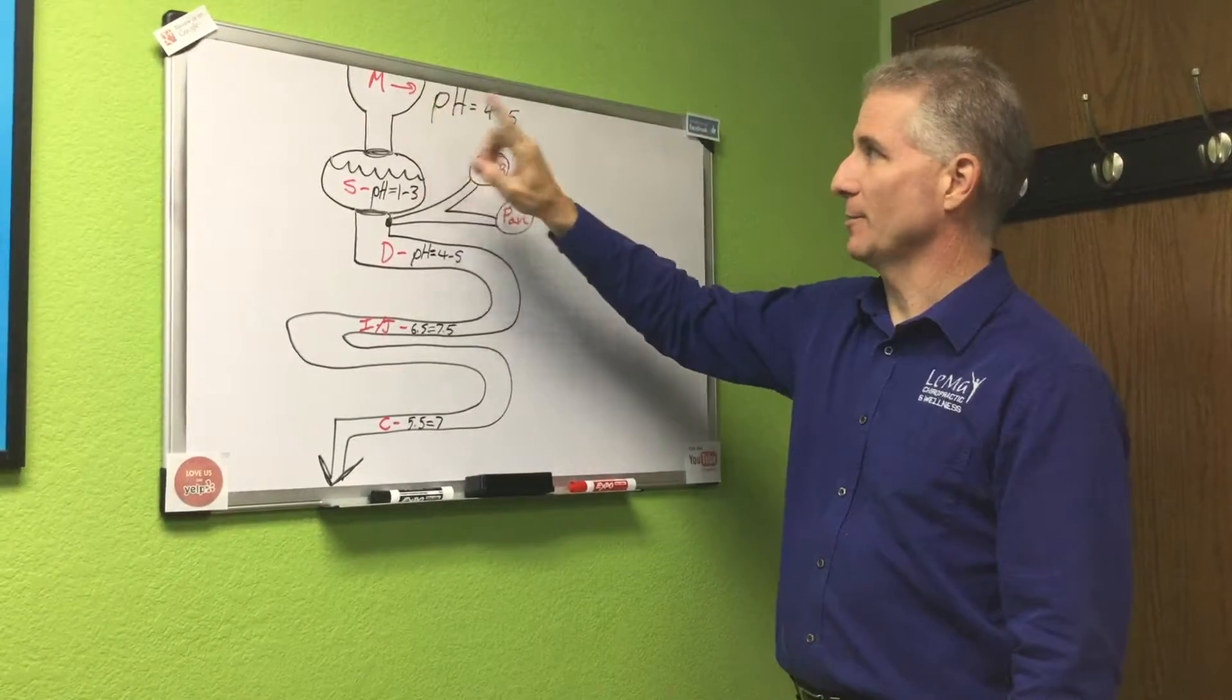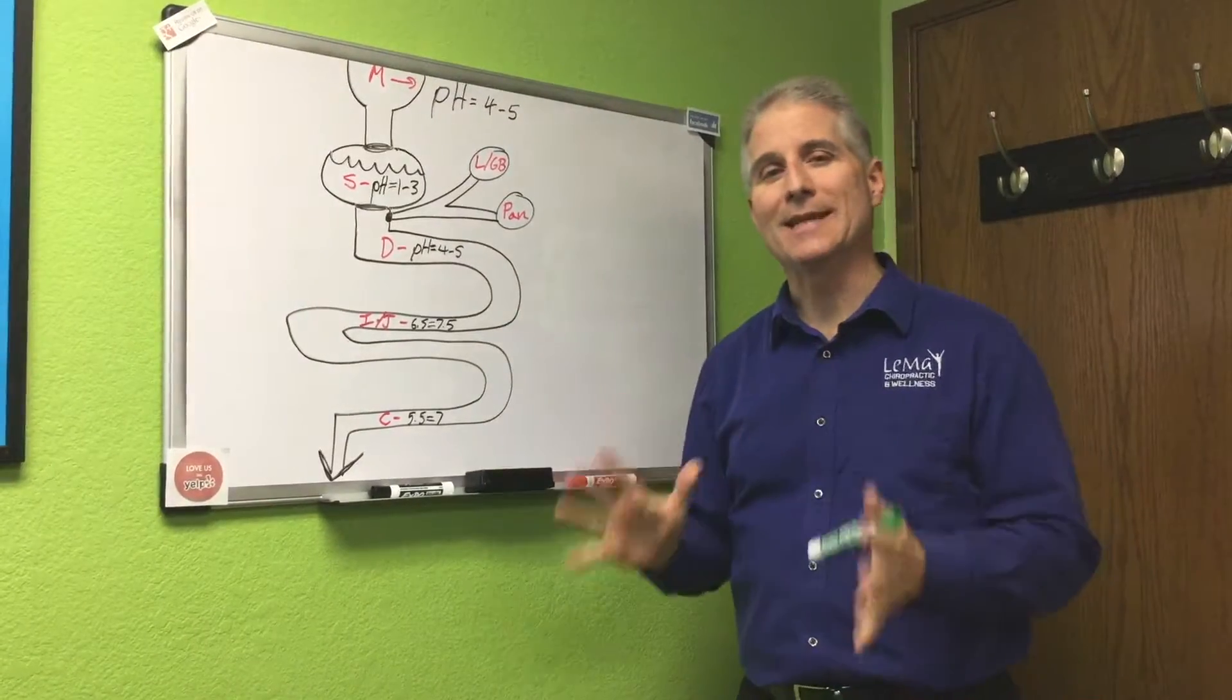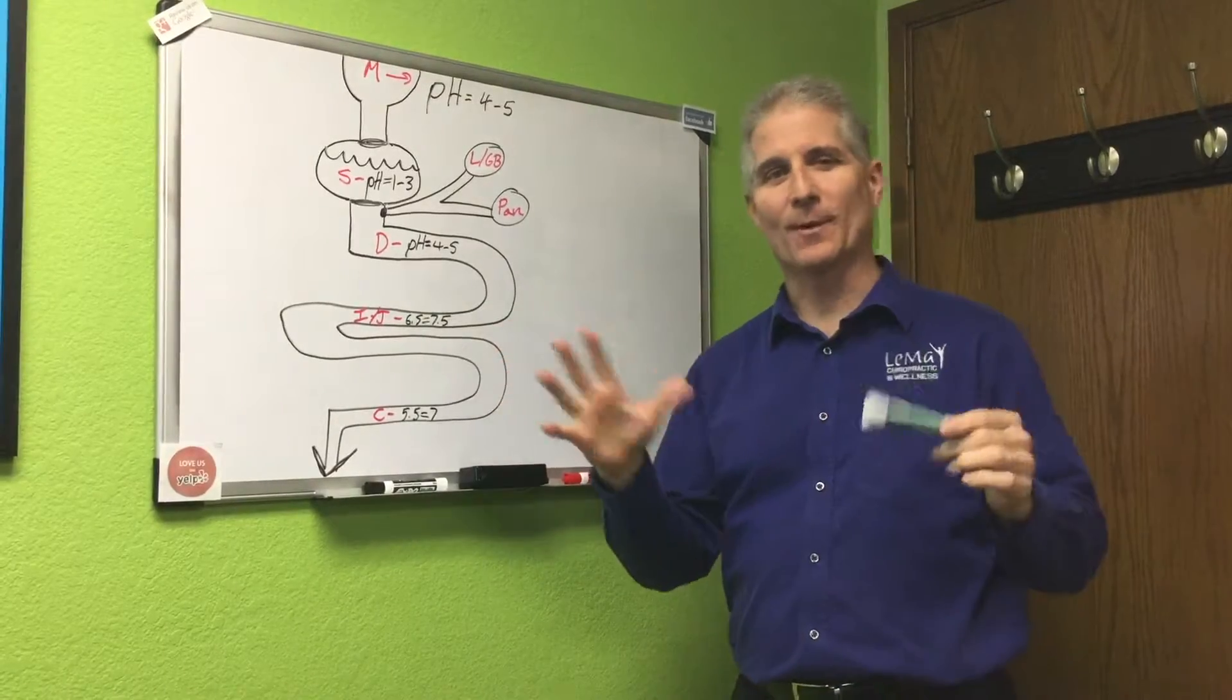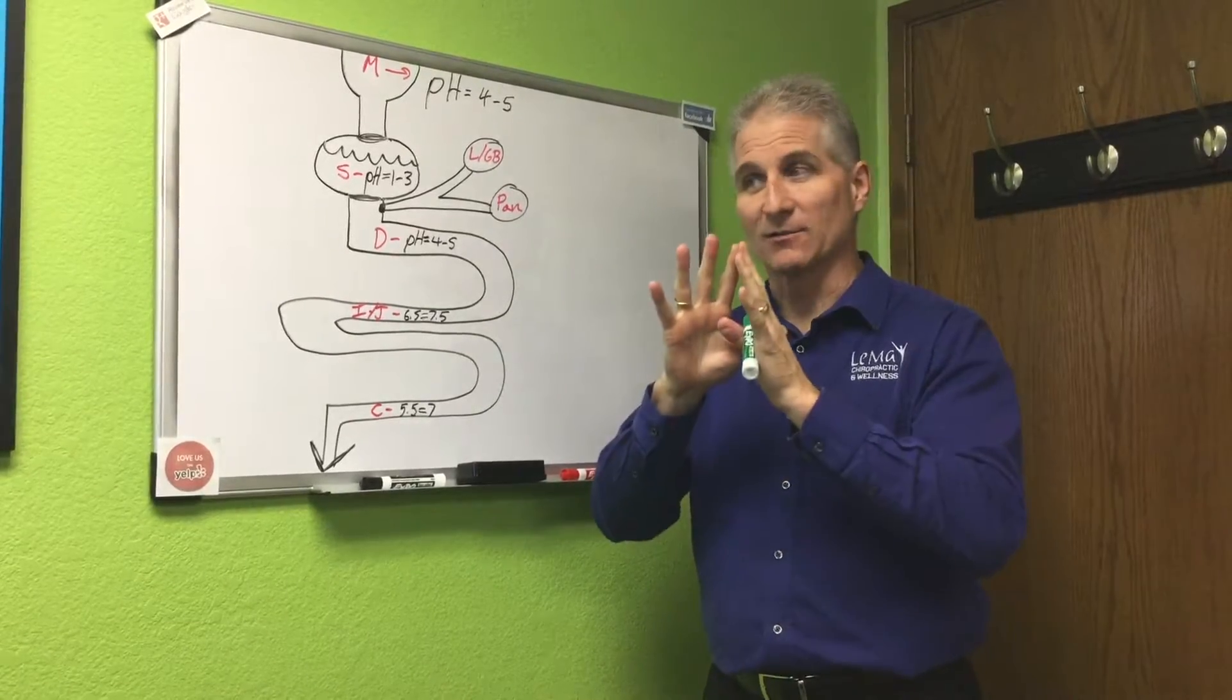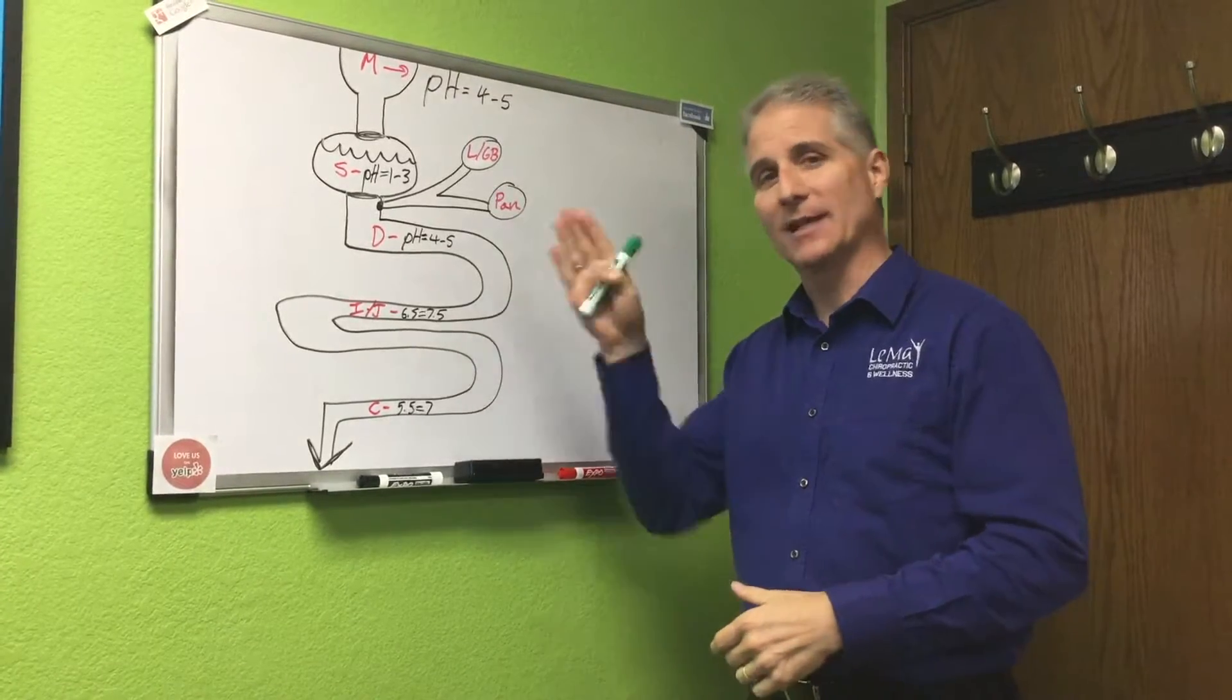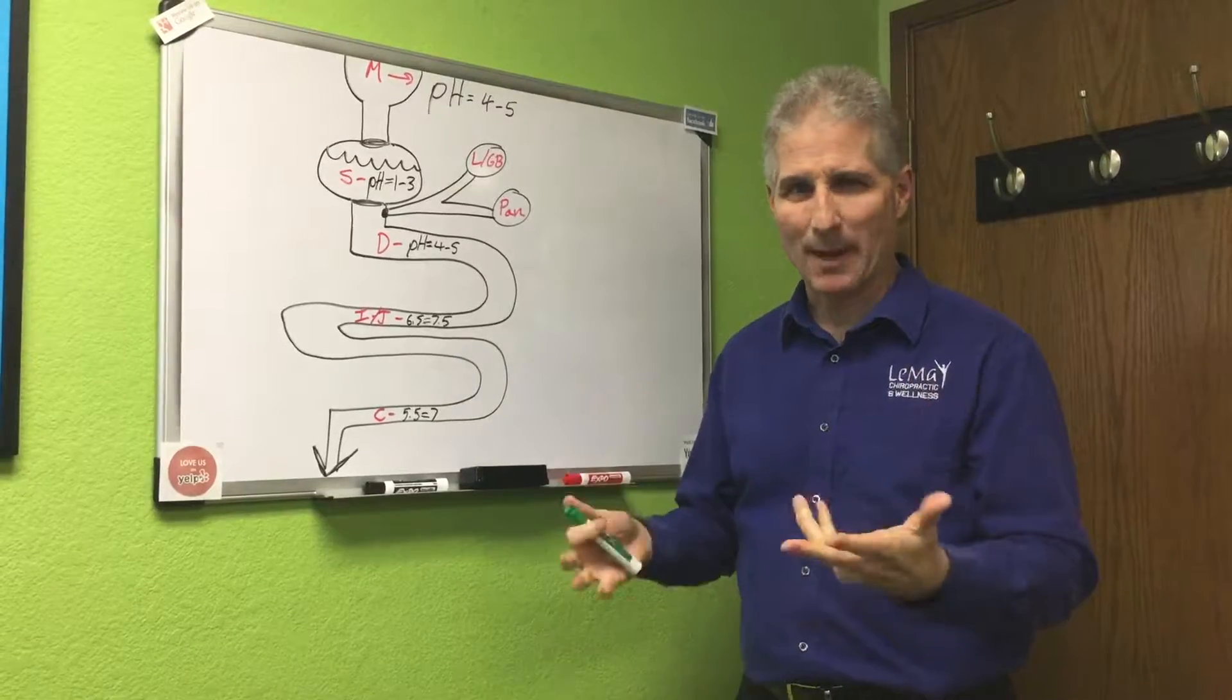So starting at the mouth up here, the pH of your mouth is somewhere between four and five. The word pH means hydrogen potential. That's how everybody remembers in chemistry. Seven is considered to be water, that's basic, as far as neutral. Then you have one to six is acidic and above seven to fourteen is considered alkaline. So that's like a base.